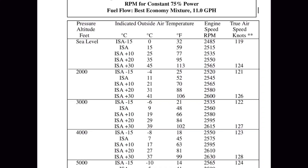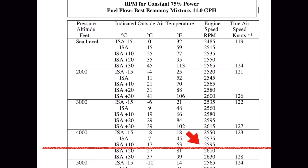At 4,000 feet pressure altitude, referencing the chart and using the temperature nearest to 18 — in this case 17 degrees Celsius — shows that we should be able to obtain 75% power at 2,595 RPM. And at that RPM, we should be able to obtain between 123 and 128 knots true airspeed.